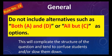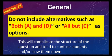Rule number eighteen: do not include alternatives such as 'both A and D' or 'all but C' as options. These are very complicated and confusing for the test taker. Avoid 'both A and D' and 'all but C' type options. That is rule number eighteen.